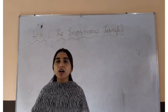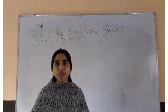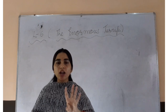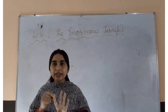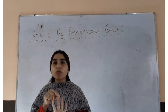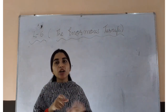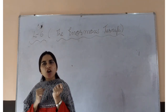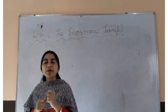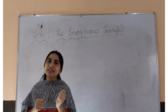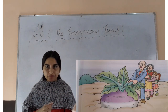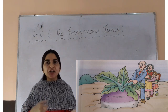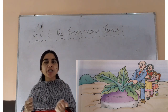How many people are working over here? Four. Old man, old woman, boy and a girl. Now these four are pulling the enormous turnip, and at last they are successful to pull the enormous turnip.